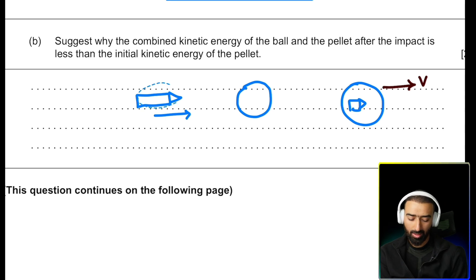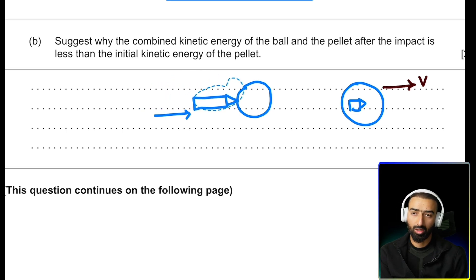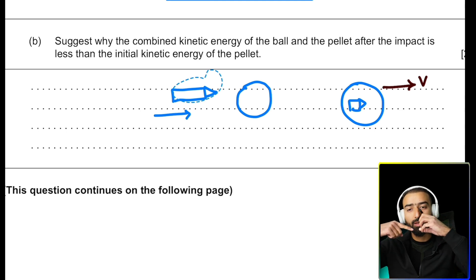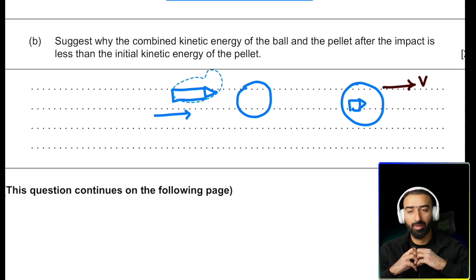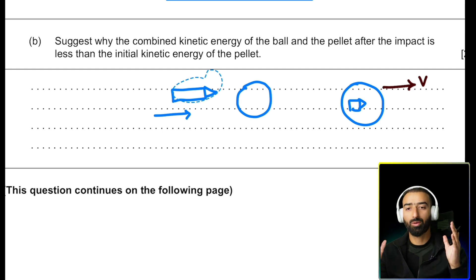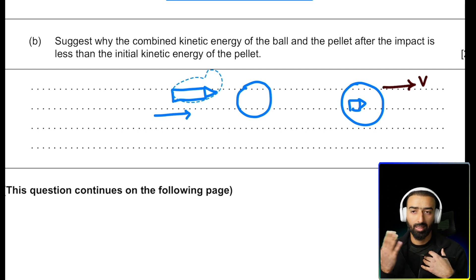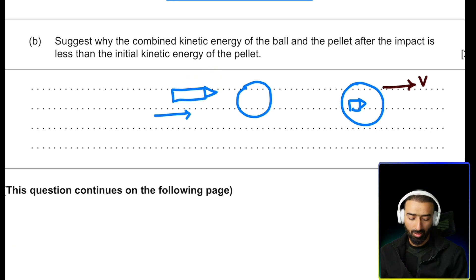The reason is when this pellet strikes the ball, the forces of interaction cause the ball to deform. And this is a permanent deformation. It's not like a spring. You deform it, the energy gets stored as potential and the spring bounces back and we get all the energy back. That's not what happens here. This is a permanent deformation. So some part of the energy of the pellet gets converted, is used to deform the ball. And that's the reason the initial kinetic energy is not equal to the final kinetic energy of the system.